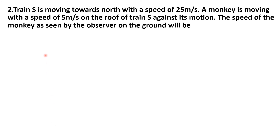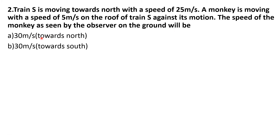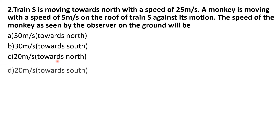Second question. Train S is moving towards north with a speed of 25 meter per second. A monkey is moving with a speed of 5 meter per second on the roof of train S against its motion. The speed of the monkey as seen by the observer on the ground will be: option A) 30 m/s towards north, option B) 30 m/s towards south, option C) 20 m/s towards north, option D) 20 m/s towards south.